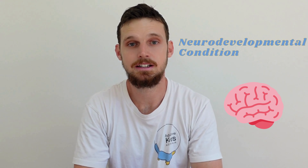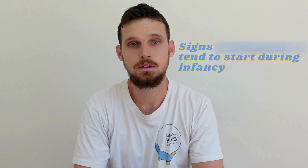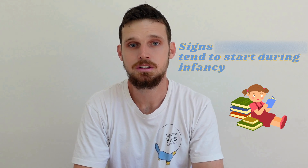So what is autism spectrum disorder? Autism spectrum disorder is a neurodevelopmental condition that occurs during infancy and early brain development. Most signs and symptoms can occur during infancy and early childhood and most children are diagnosed around preschool age. However, children can be diagnosed when they're older in primary school, high school, or even as adults.